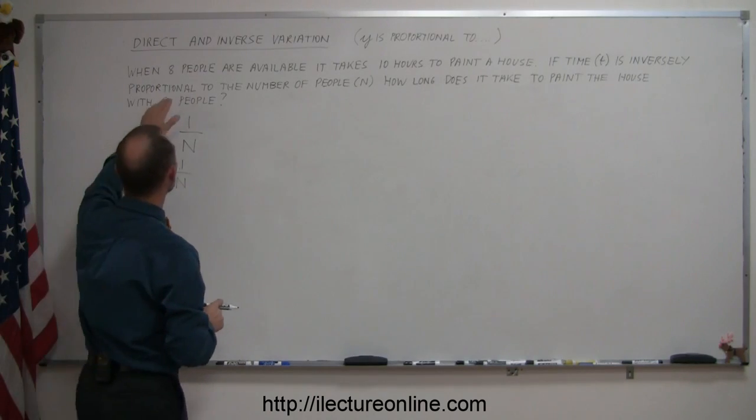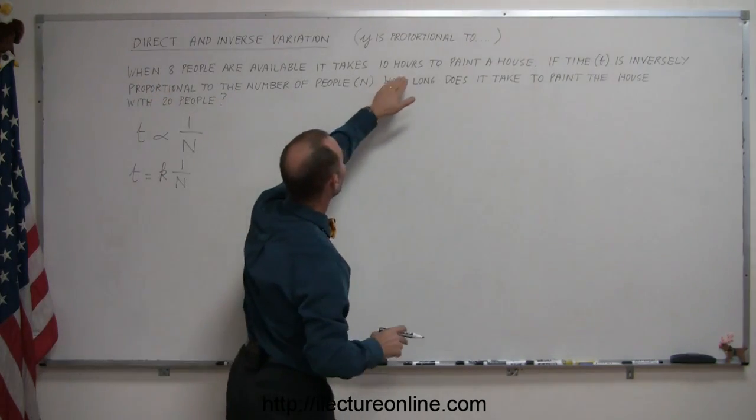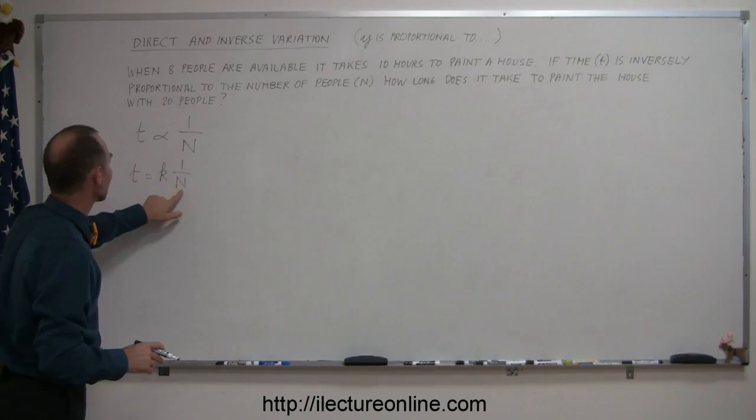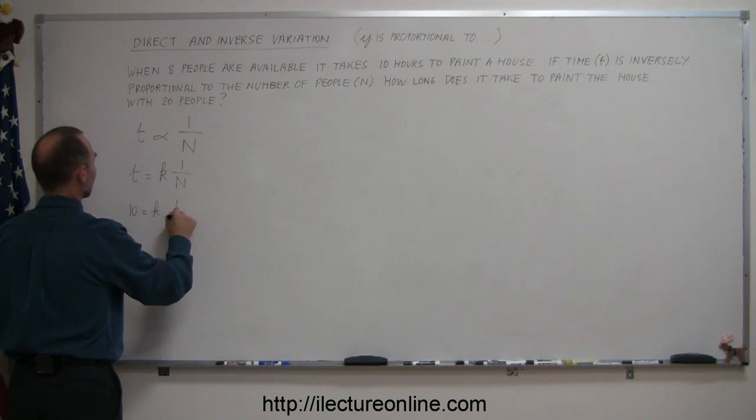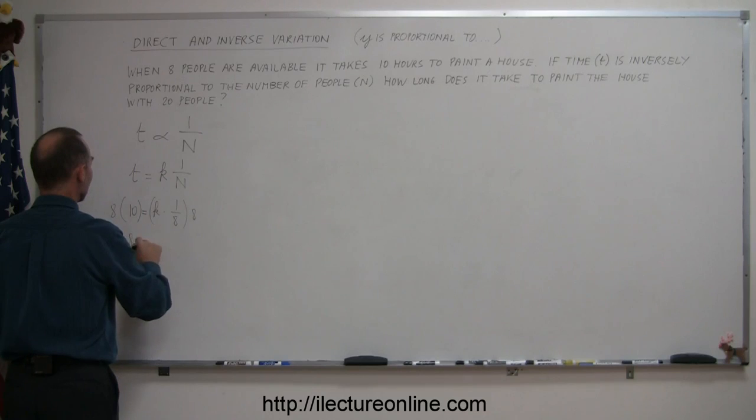We can do that by plugging in the information. When 8 people are available it takes 10 hours, so we plug in 8 for n and 10 for t. So we have 10 equals k times 1 over 8. Multiplying both sides of the equation by 8, we get 80 equals k.